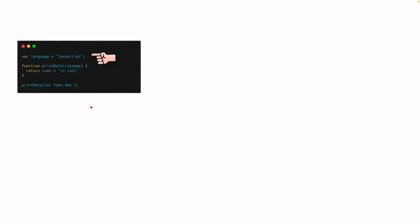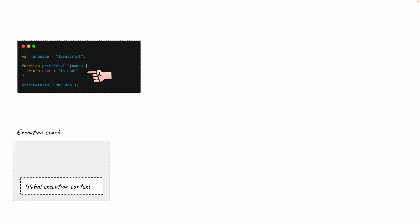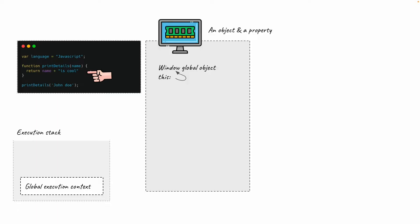When the compiler starts scanning the code, a global execution context is created and the variables and functions we have are evaluated within that context. Computers have a stack as well as a heap where they handle memory, and the execution context resides within the stack. When a context is created, it gives us two things: an object called window and a property called this, which points to the window.